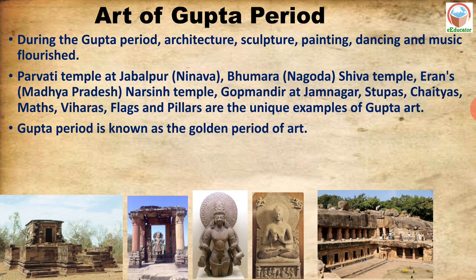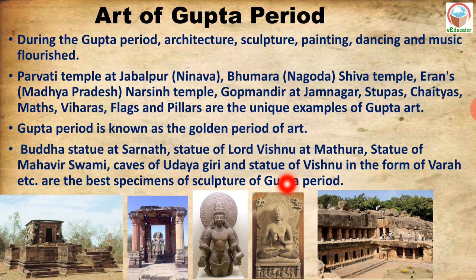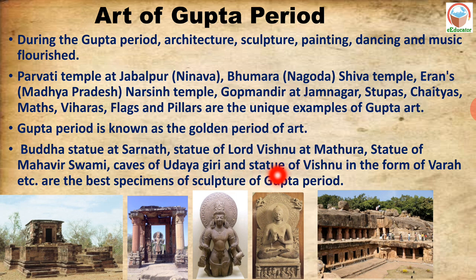The Gupta period is truly known as the golden period of art. Key sculptures include the Buddha statue at Sarnath, the statue of Lord Vishnu at Mathura, the statue of Mahavir Swami, the caves of Udayagiri, and the statue of Vishnu in the form of Varaha. These are among the best specimen sculptures of the Gupta period, made during the time of the Gupta Empire.